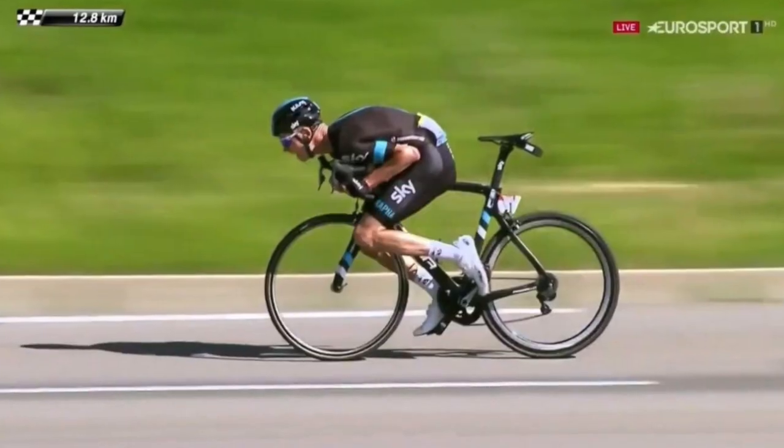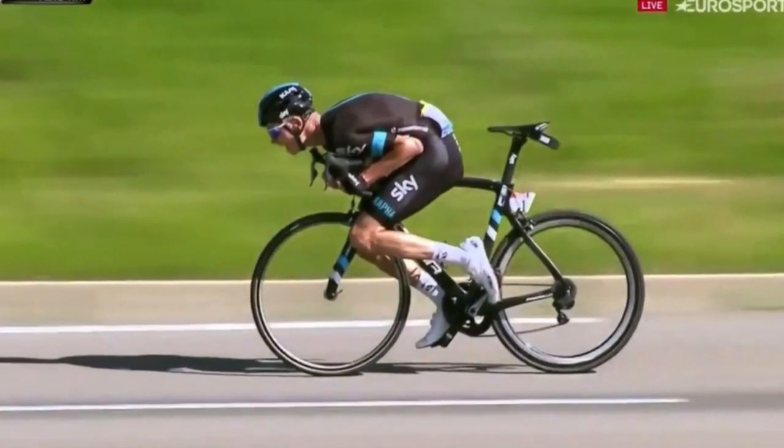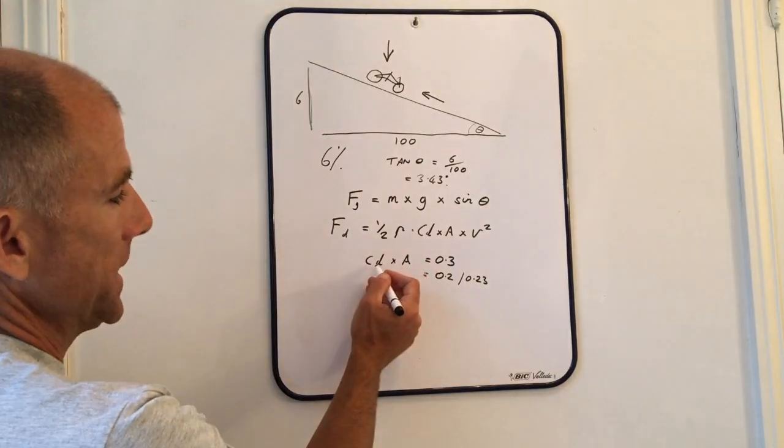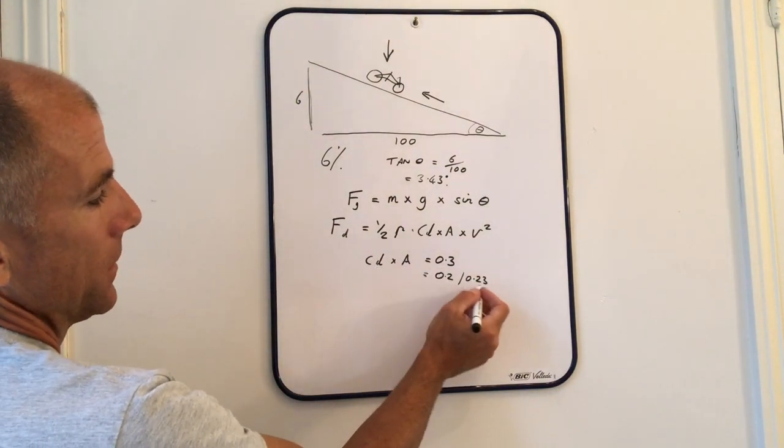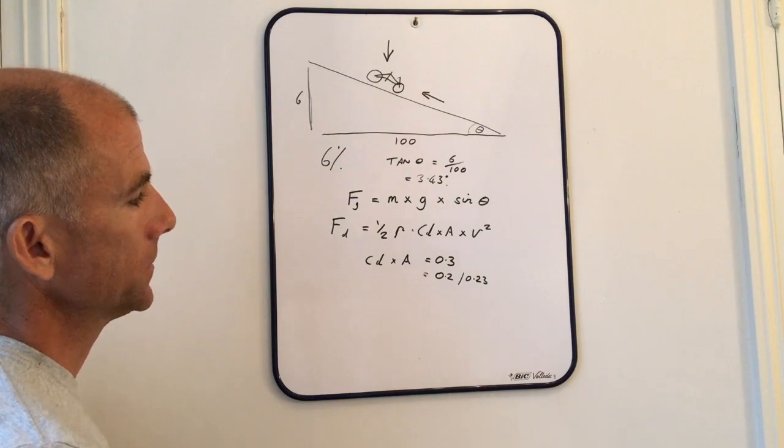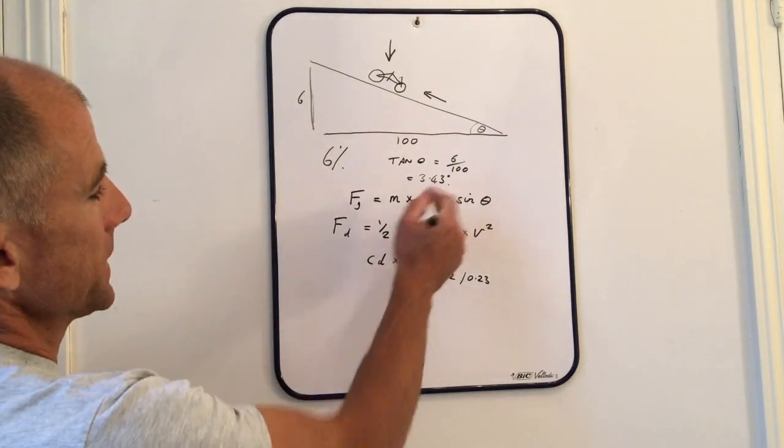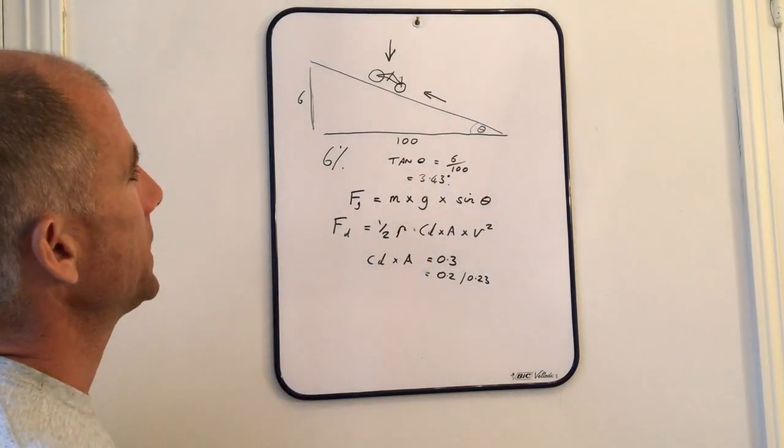Obviously, a big reduction. Not only are you reducing your area when you're coming down like that, but you're also improving your CDA, so the overall effect is to bring this figure down significantly. Let's plug some figures into these two equations and see what pops out.